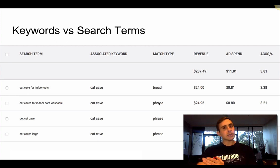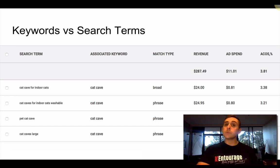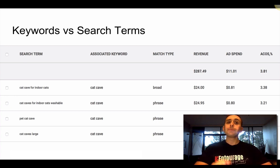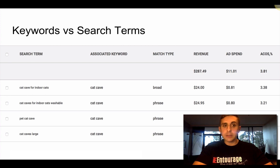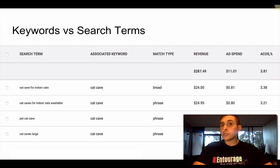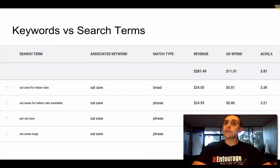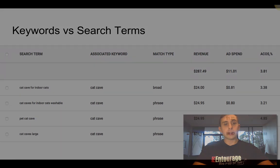I will go over match types in the next video. So the whole point of this video is to know the difference between a keyword and a search term. One more time: a keyword is what you're bidding on inside of your Seller Central campaigns, and a search term is what a customer is actually shopping for that connects with your keyword. Next video, I'll share the different match types and how to connect to different search terms so that you can get more visibility for your product.